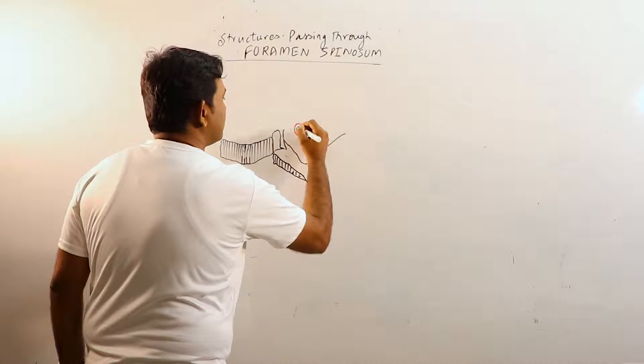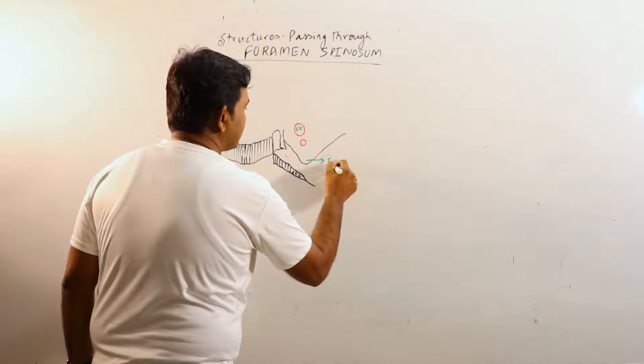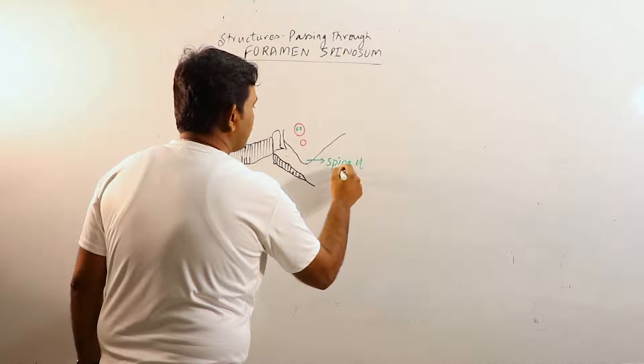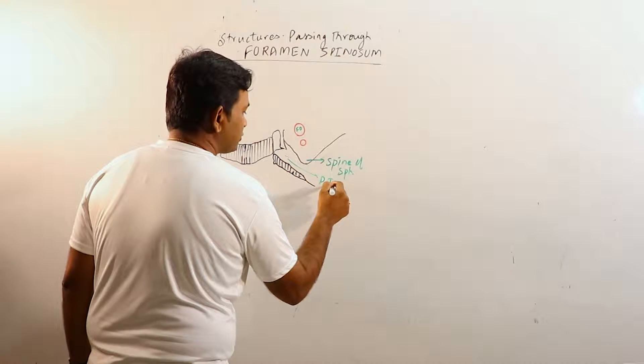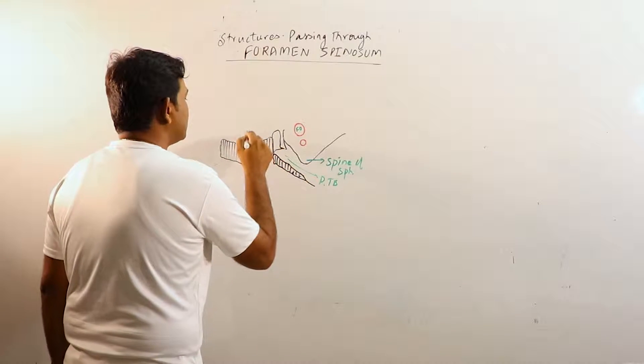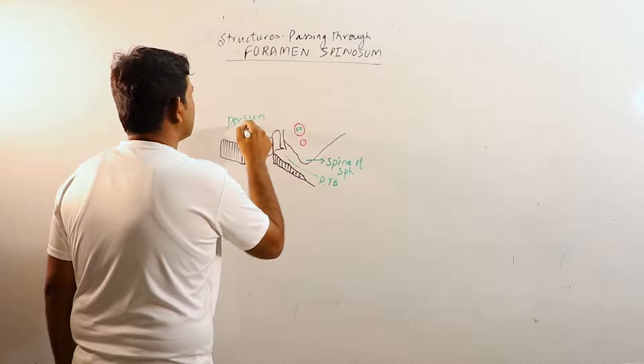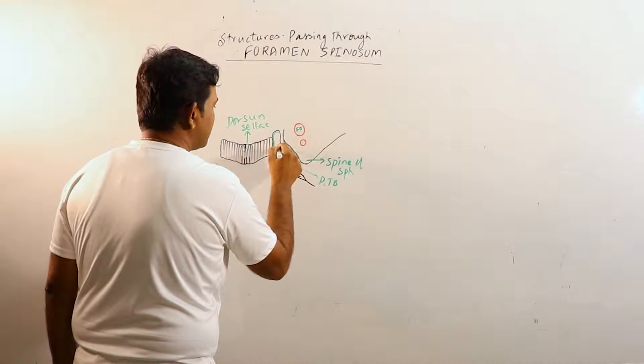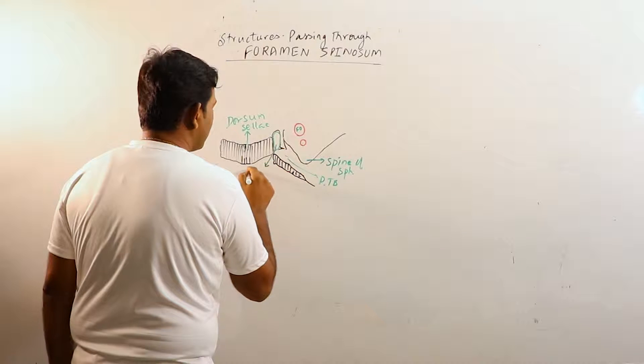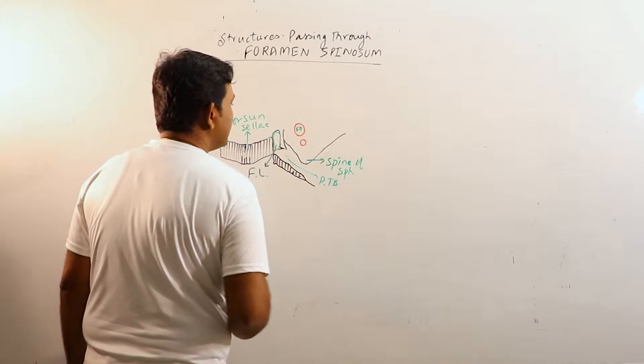This is foramen ovale, this is spine of sphenoid. This is petrous temporal bone, petrous part of temporal bone. This is dorsum sellae and this large foramen is foramen lacerum.